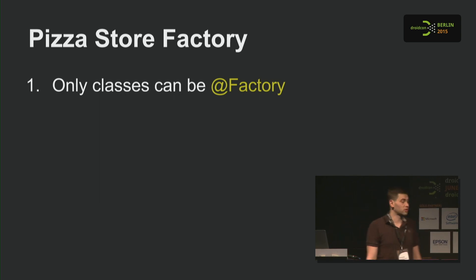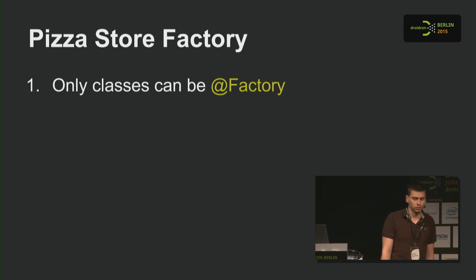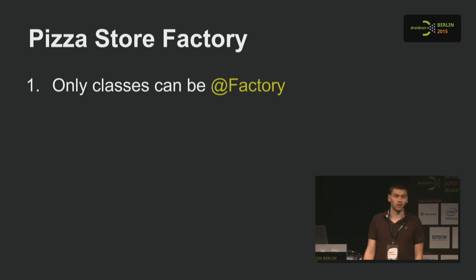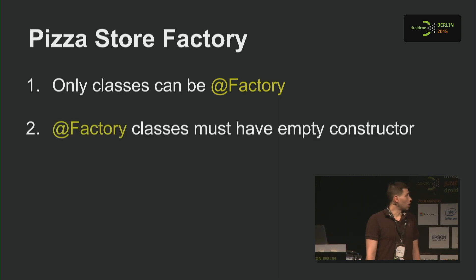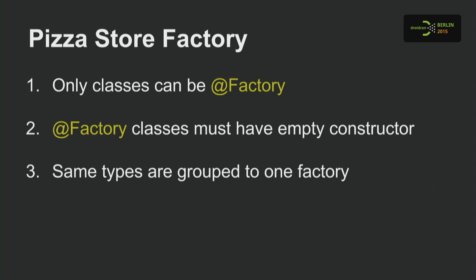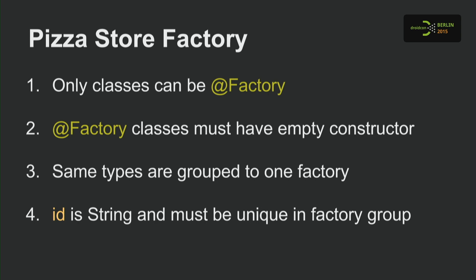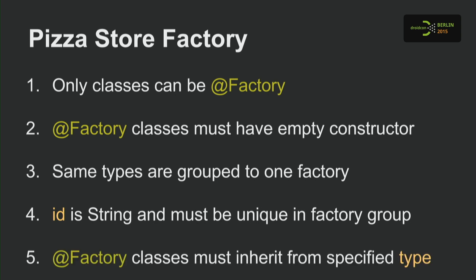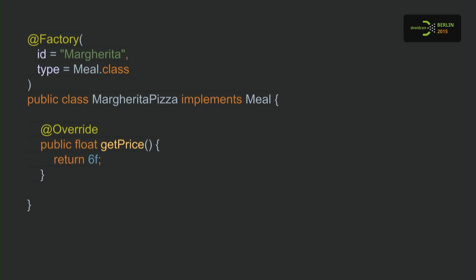We also introduce some rules for our factory annotation processor. Rule one: only classes can be annotated with @Factory. Rule two: the annotated class must have an empty constructor. Rule three: same types are grouped into one factory — everything specifying Meal.class gets grouped together. Rule four: the ID must be unique, so there cannot be two classes annotated with the ID 'margherita'. Rule five: the annotated class must inherit from the specified type — if you specify Meal, the class must also be a Meal.